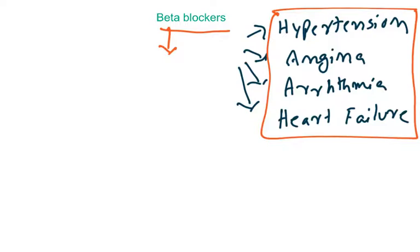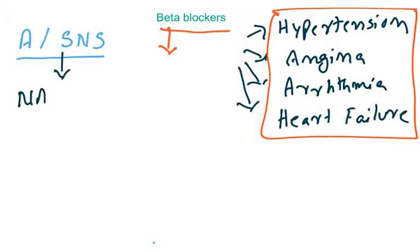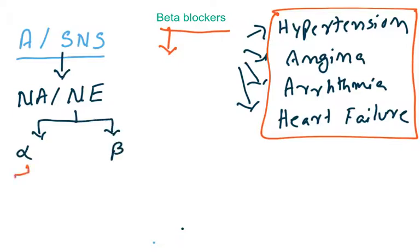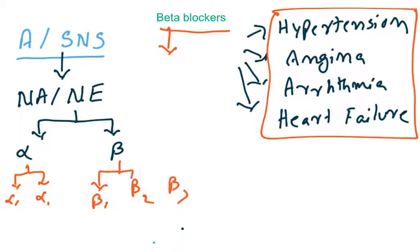Beta receptors are adrenergic receptors — the adrenergic system is the sympathetic nervous system, a branch of the autonomic nervous system. The neurotransmitter of the sympathetic nervous system is noradrenaline, also known as norepinephrine. It acts on alpha receptors (alpha 1 and alpha 2) as well as beta receptors (beta 1, beta 2, and beta 3).